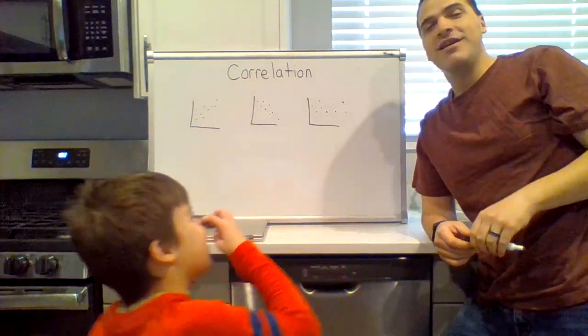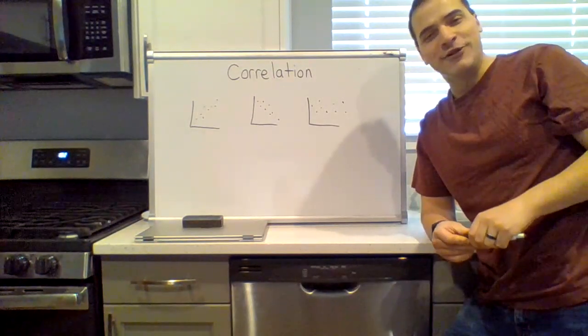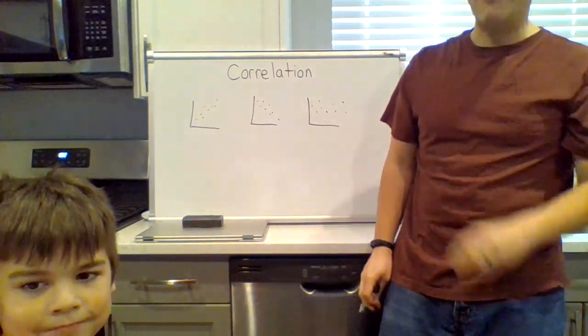Nathan tells me to tell you to like and subscribe. I honestly don't care, but if you want to feel free to do so. Okay, so there are three different types of correlation you can have.